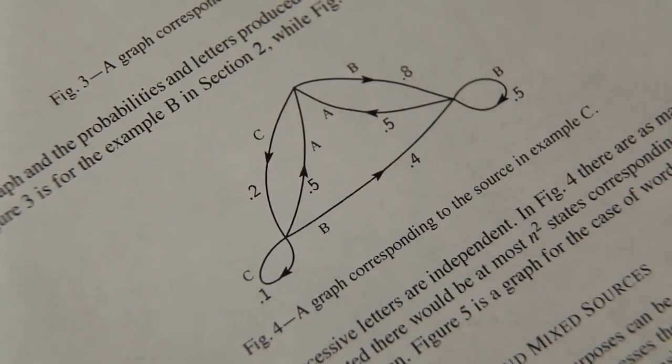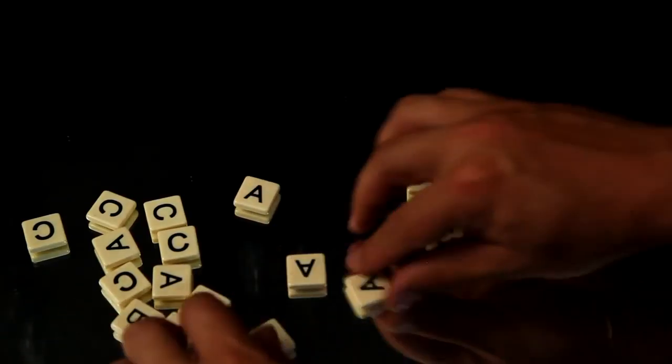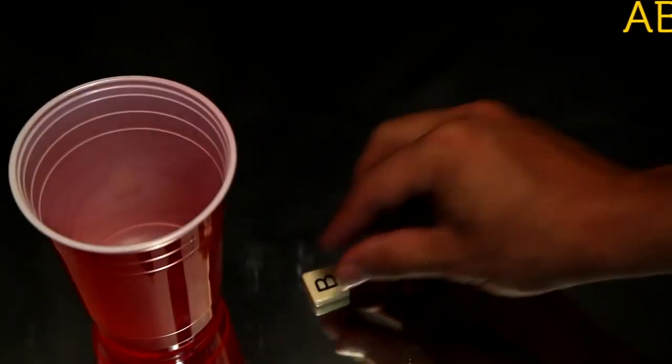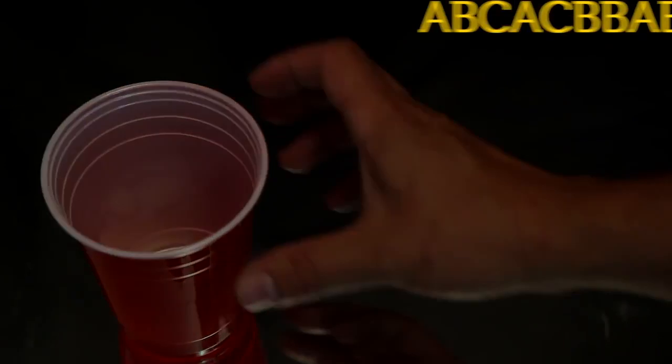He shows that you could design a machine to generate similar looking text using a Markov chain. He starts with a zeroth order approximation, which means independently selecting each symbol A, B, or C at random to form a sequence. However, this sequence doesn't look like the original.